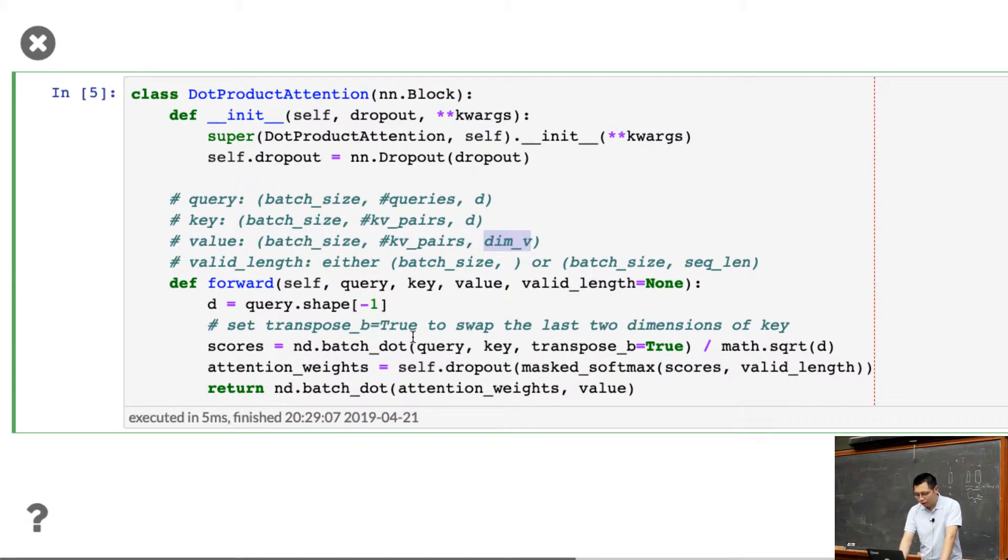So then, what we do here is that we just use a batch dot. The idea here is that you need to make, it's a batch, for each batch, we do a matrix multiplication. So it's Q times K transpose. So then we give a query, we give a key, and say that transpose B equal to 2, just we transpose key. And then divide it by the square root of D. So that's a score.